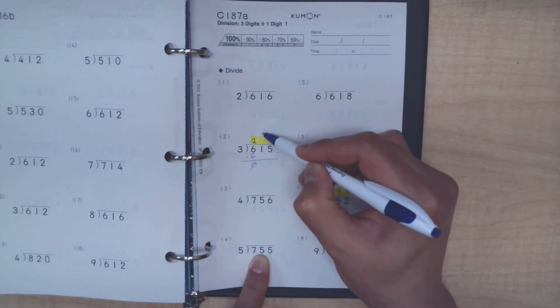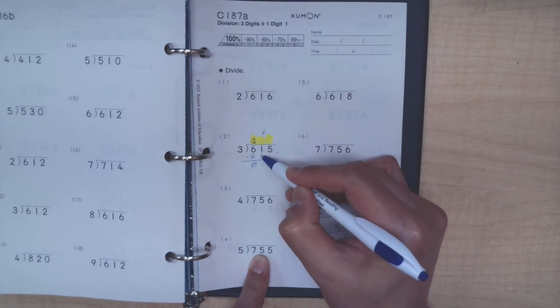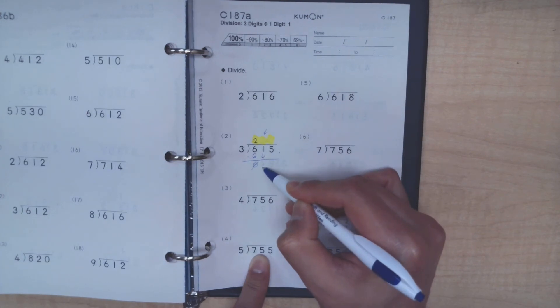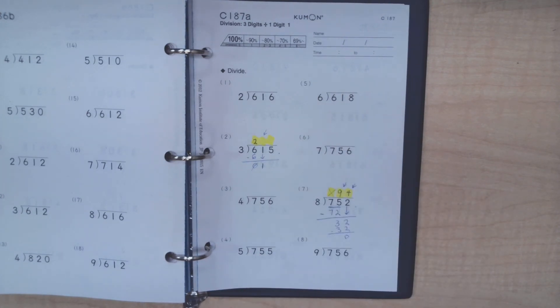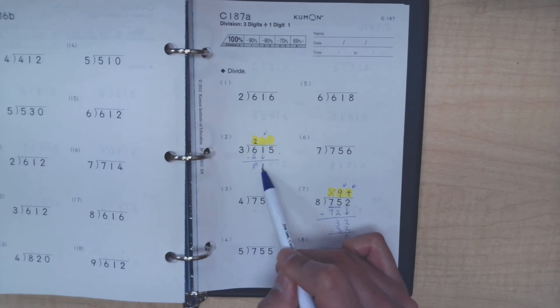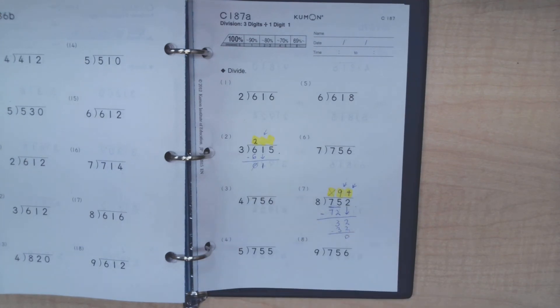For the next spot here, we are going to bring the number 1 down. This is a very important part. We ask ourselves again, what's 1 divided by 3? Can the 3 go into a 1? No.